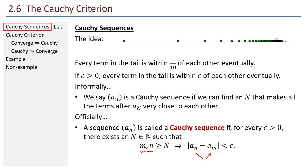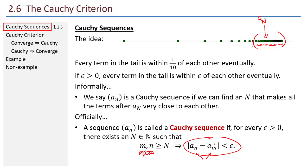So in the picture above, given any epsilon, there exists a capital N — so maybe there's my a sub N right there — so that for all m and n greater than or equal to N, all those terms are within epsilon of each other. It's telling us about the tail: how tightly the terms of the sequence are compacted in the tail of the sequence.